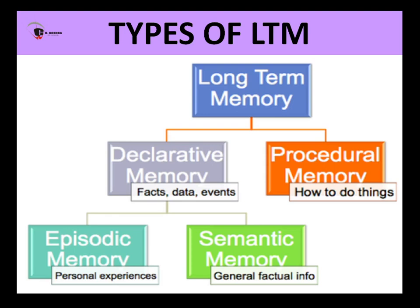Declarative memory actually pertains to three important areas. You have facts, you have names, you have dates. Of course, it can also store certain data and events — all of that comes under the declarative memory. So many facts, names, important dates — all of that is getting stored in this type of memory.